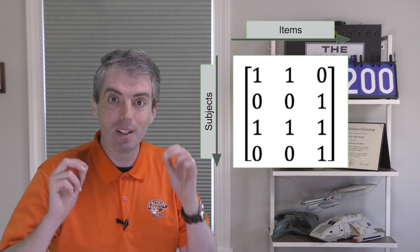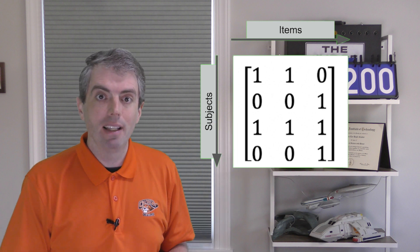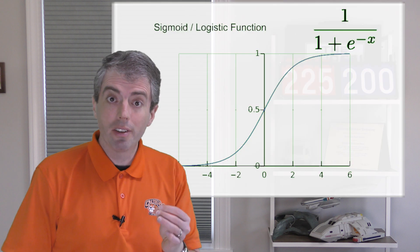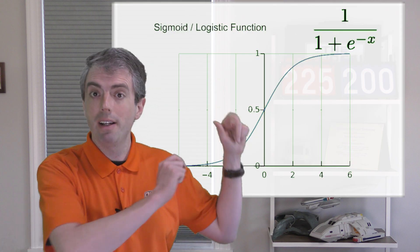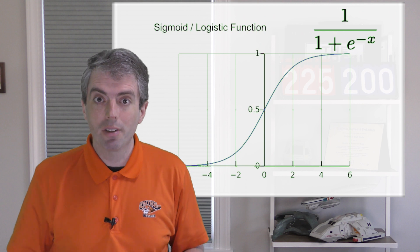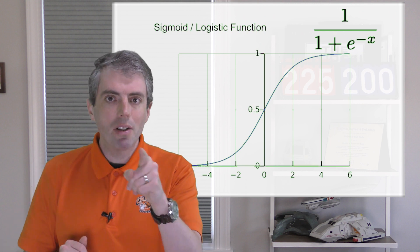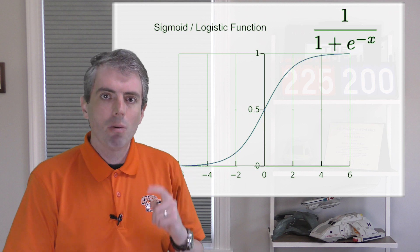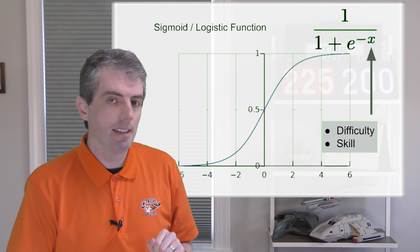The goal is to predict each of these binary responses as if it were a logistic regression. So like all logistic regression, the prediction comes out of a sigmoid function. So what goes into that sigmoid function? We'll add more parameters soon, but let's start with just two: difficulty and skill.